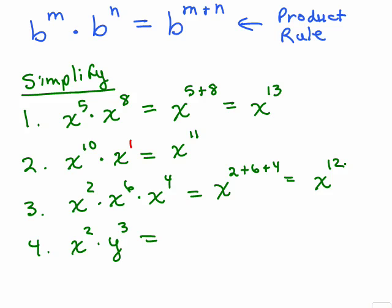What about this fourth one? We've got X squared times Y cubed. Those don't have the same base. You cannot simplify them using the product rule. So all you could do is write X squared, Y cubed. Cannot be simplified any further.